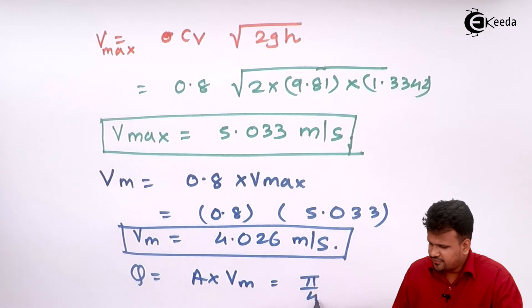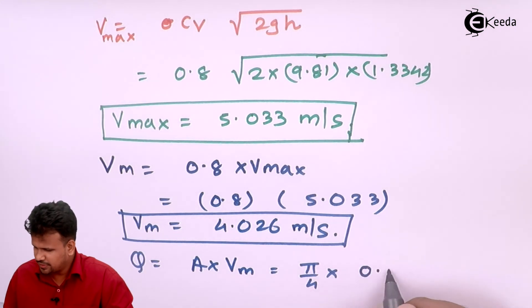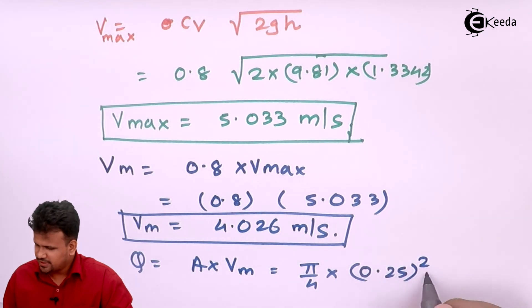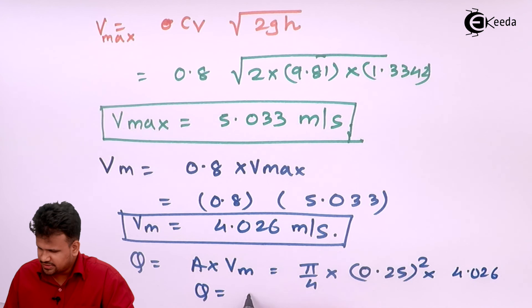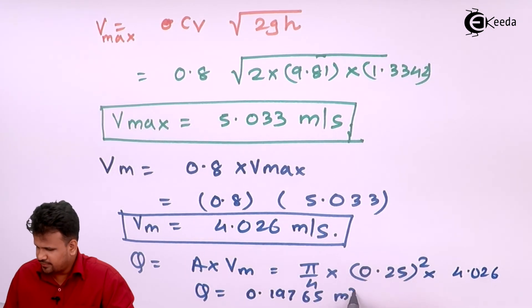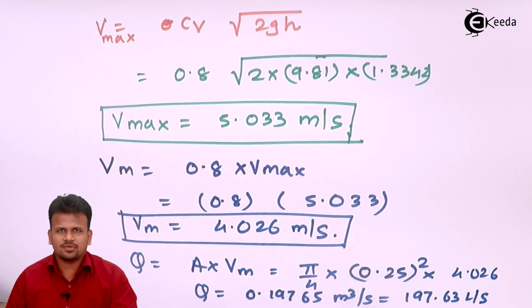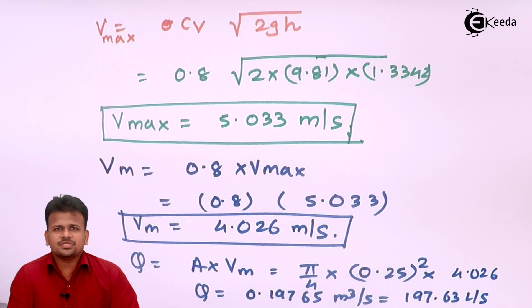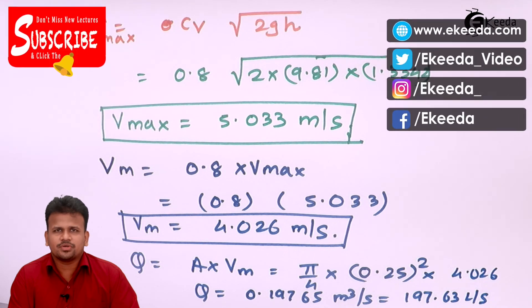The discharge equals area into mean velocity, which is pi by 4 into diameter squared into velocity. The diameter is 250 mm, i.e., 0.25 meters, and the mean velocity is 4.026 m/s. So the discharge comes out to be 0.19765 meter cube per second, or 197.63 liters per second. In this problem we calculated the discharge, the maximum velocity, and used the difference of stagnation and static head to find the dynamic head.